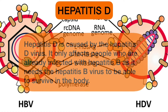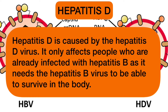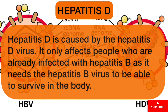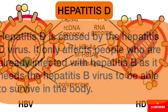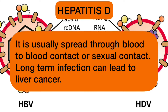Hepatitis D is caused by the Hepatitis D virus and only affects people who are already infected with Hepatitis B. This is because Hepatitis D needs the Hepatitis B virus to be able to survive in the body. It is usually spread through blood-to-blood contact or sexual contact.